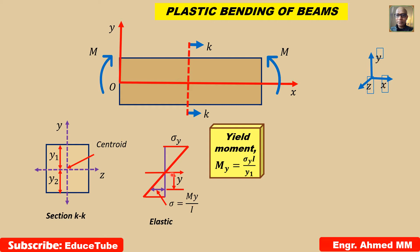Now if we increase M, there will be a stage where the maximum direct stress at the point farthest from the neutral axis is equal to sigma y. The corresponding value of M we call the yield moment, and My equals sigma y · I divided by y1.